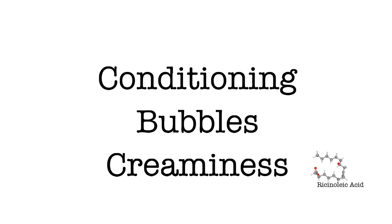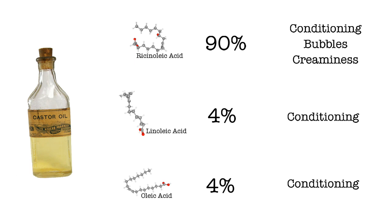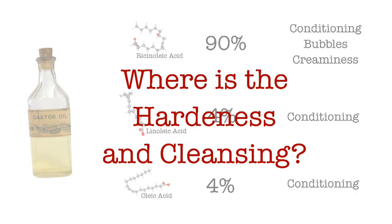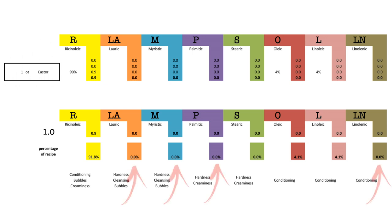Now that we know the players, let's see how they work together. Let's use castor oil as an example. Castor oil is made up in large part of 90% ricinoleic acid, 4% linoleic acid, and 4% oleic acid. Looks great — if I could just use castor in my recipe, my skin would be so conditioned with creamy bubbles. But not so fast. There's definitely something that we're missing. Where are the hardness and cleansing properties? If we input castor oil's percentage makeup into chart form, we can see that using a recipe that only consists of castor oil, we'll have 0% hardness and 0% cleansing. Just imagine a goopy soap.